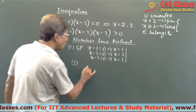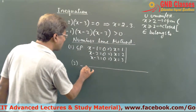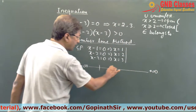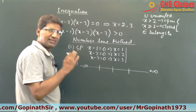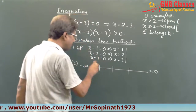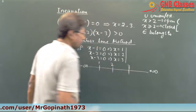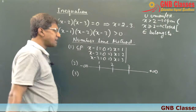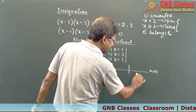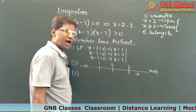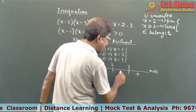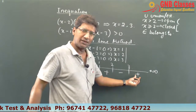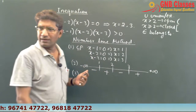The second step: draw a number line with minus infinity on the left and plus infinity on the right. Plot the critical points in ascending order on the number line — 1, 2, and 3. The third step: always start from the right-hand side block and give a plus sign, then minus, then plus, then minus — alternating plus and minus from right to left.